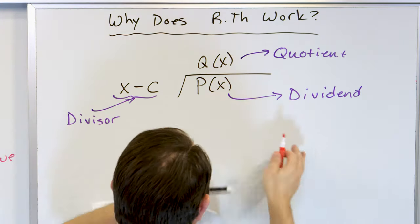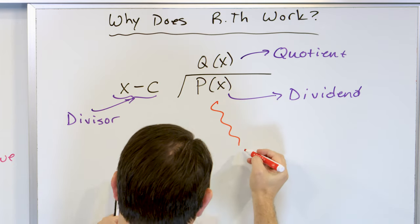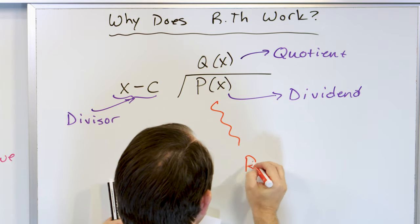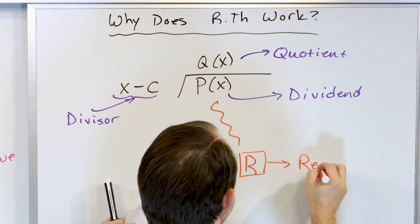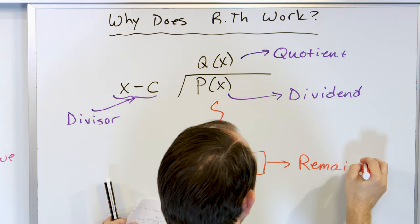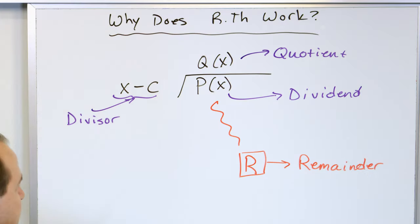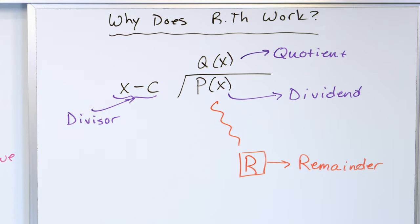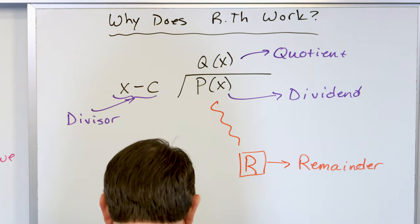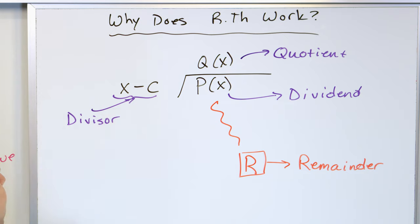We've done long division enough to know that you're going to get some kind of remainder at the end. I've already done it with synthetic division — we know the process ends with a remainder of 5. But let's go through it, because it's going to help me explain to you why this remainder theorem actually works.